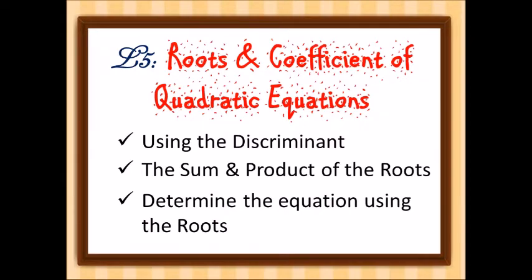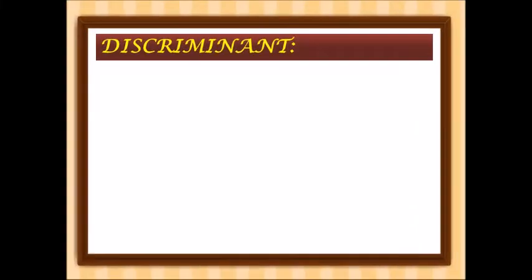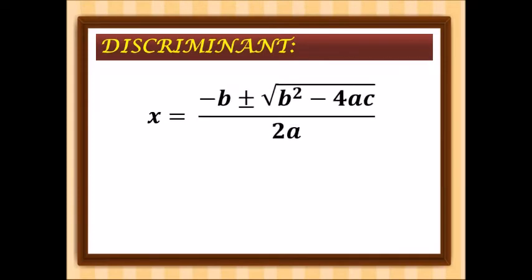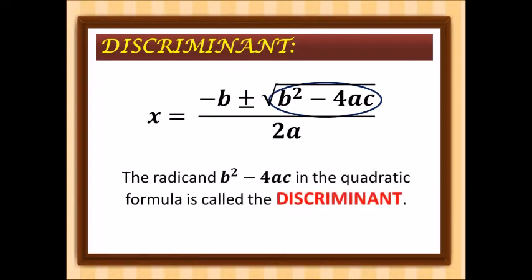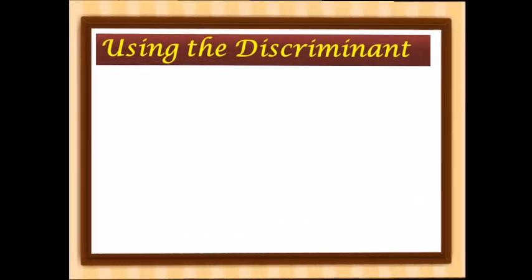Let's have first the discriminant. We've learned about the quadratic formula: x is equal to negative b plus or minus the square root of b squared minus 4ac over 2a. The b squared minus 4ac here is what we call the discriminant of our quadratic equation.